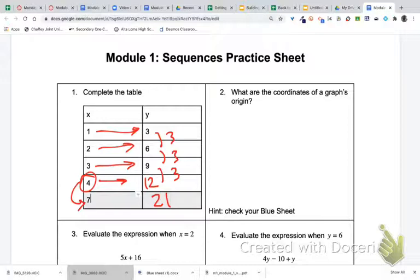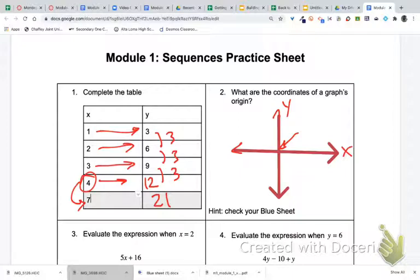For number two, you have a coordinate plane, and we have this here. What we're trying to do is identify the coordinate for the origin. So on your blue sheet, it actually shows the origin and the coordinate point for that is 0 comma 0. We want to make sure that we include the parentheses anytime we're involving a coordinate pair.